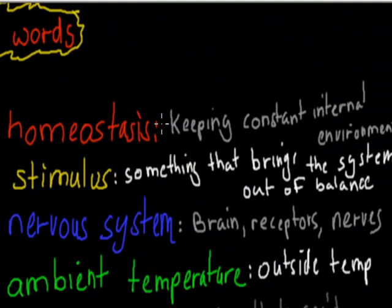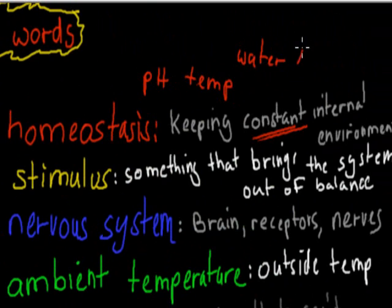We've got the word homeostasis. Remember homeostasis? That was keeping a constant internal environment. That may not be keeping our pH the same, keeping our temperature the same, keeping our water levels the same, keeping glucose the same, just keeping everything at a constant level, at the same level.